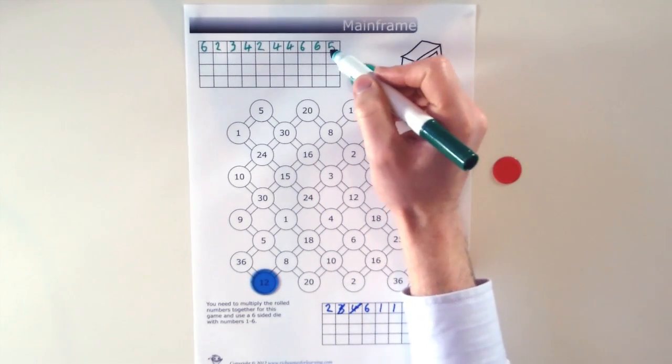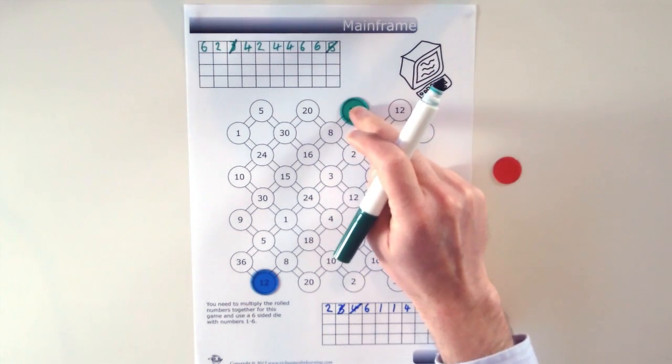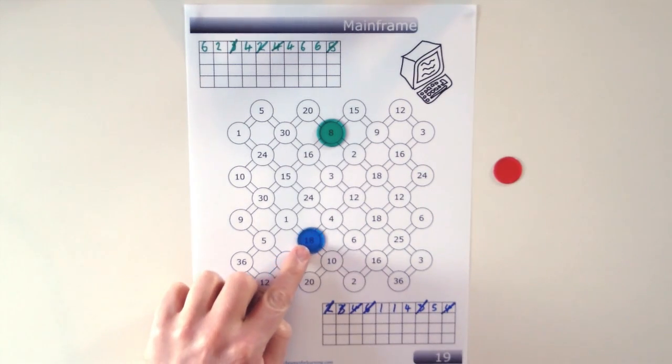Green's turn and they can multiply 5 by 3 to start on the 15. And blue can multiply 3 by 6 to make 18 and move forward to the 18.